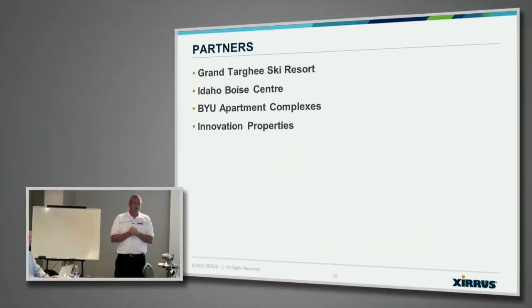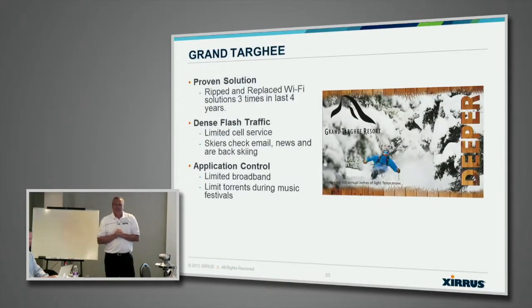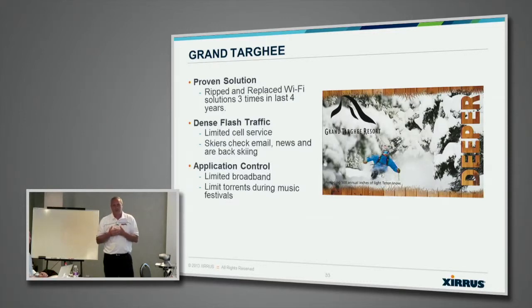I'm going to highlight three or four examples that we use in our business. I don't know if any of you know where the Grand Tetons are, but in the Tetons is an awesome ski resort called Grand Targhee Ski Resort. They came to us and said, 'We've ripped and replaced our wireless infrastructure three times in the last four years. We're sick and tired of being sold a bill of goods and then not having it perform.' We're going to take this in baby steps — you're going to have to prove this one step at a time.